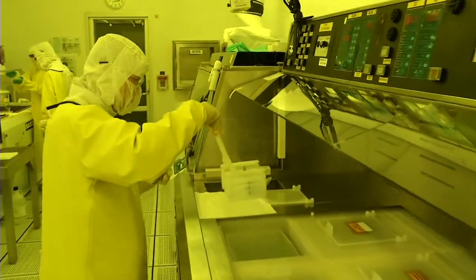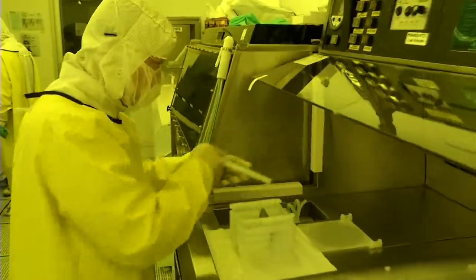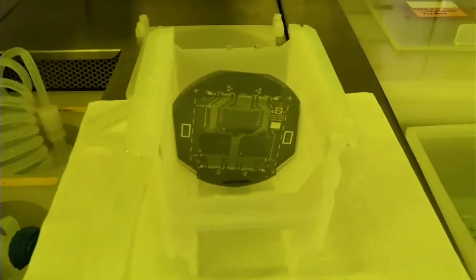After etching, the photoresist mask is stripped off in a solvent and the substrate is ready for deposition of the next layer of material.